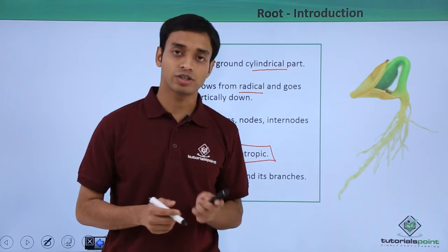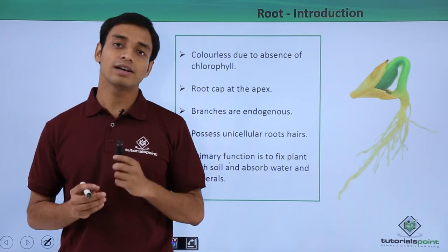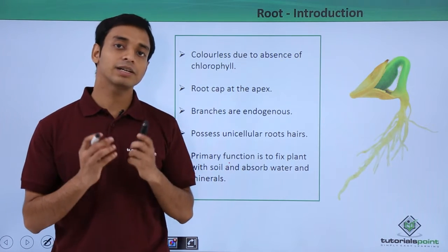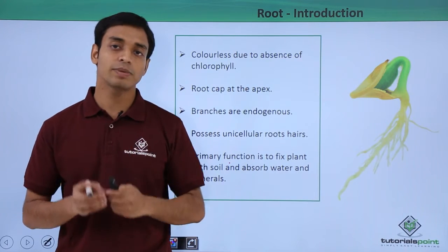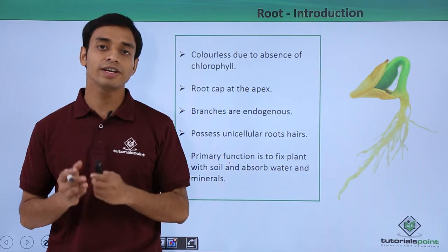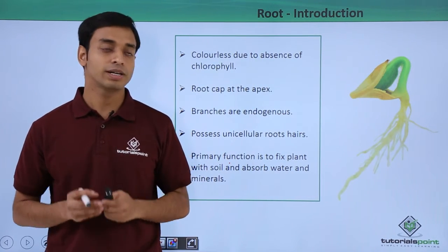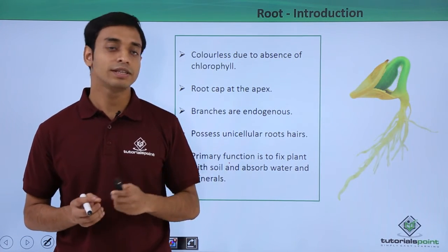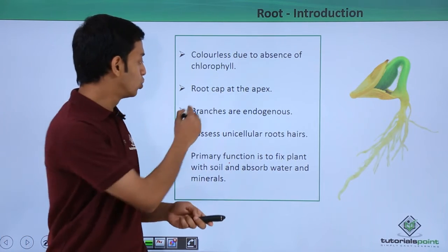These roots are colorless because they do not have color-giving pigments like chlorophyll. In various parts of the plant — mostly the leaves — chlorophyll is present, which is a very important structure for the process of photosynthesis. But roots lack chlorophyll, and that is the reason they are mostly colorless.